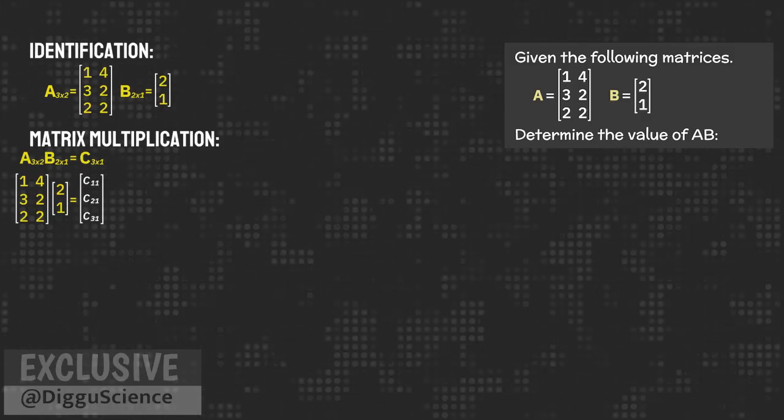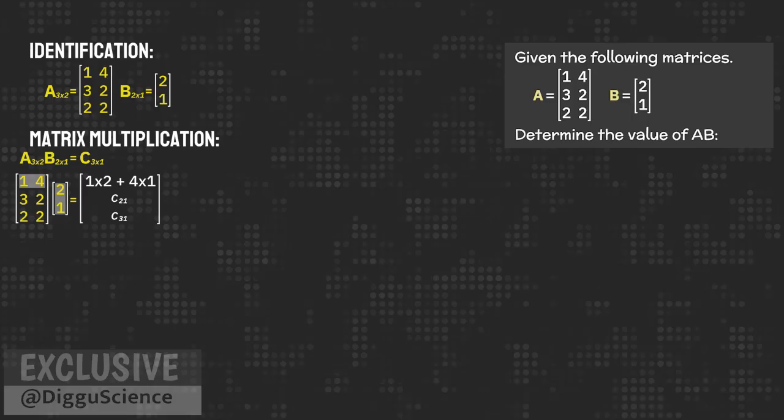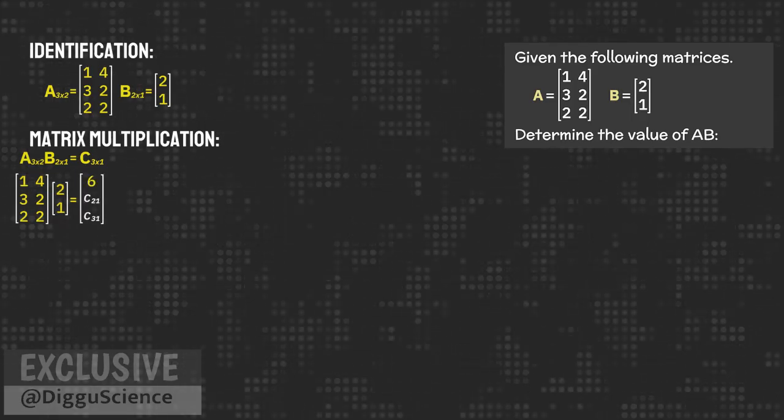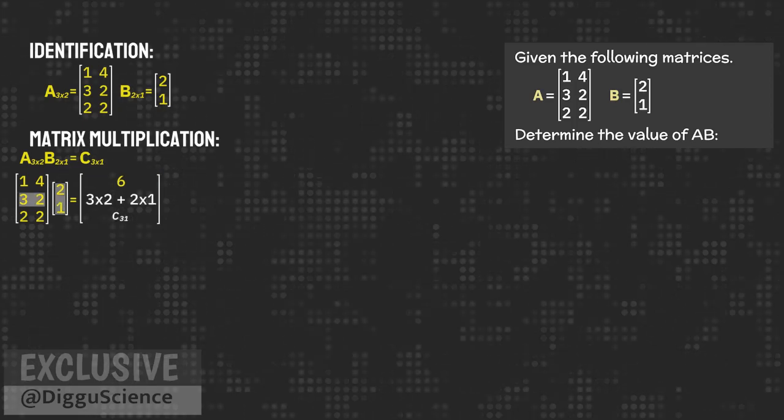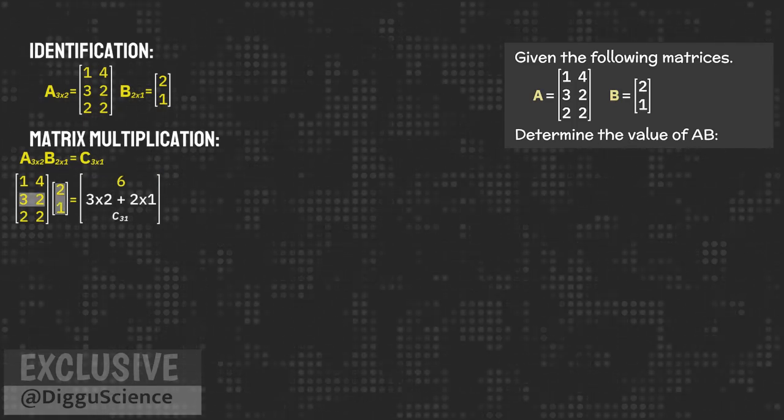The element C11 is 1 times 2 plus 4 times 1, equals 6. The element C21 is 3 times 2 plus 2 times 1, equals 8.